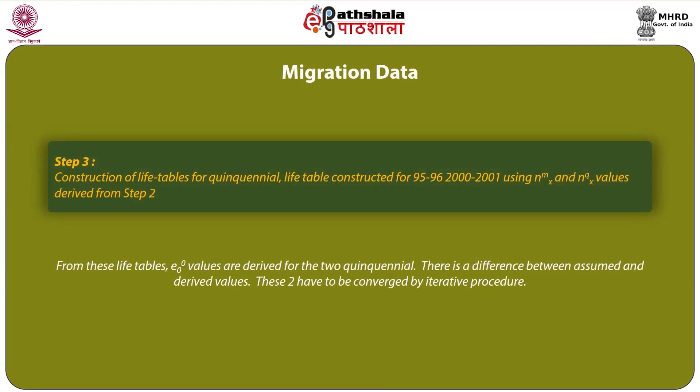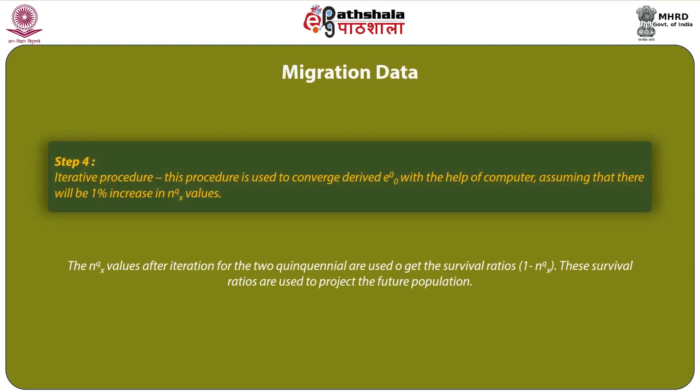Step 3 involves construction of life tables for quinquennia — life tables are constructed for 1995-96 and 2000-2001 using N_mx and N_qx values derived from Step 2. From these life tables, life expectancy at birth (E₀₀) values are derived for the two quinquennia. There is a difference between assumed and derived values; these two have to be converged by an iterative procedure, which is discussed in Step 4.